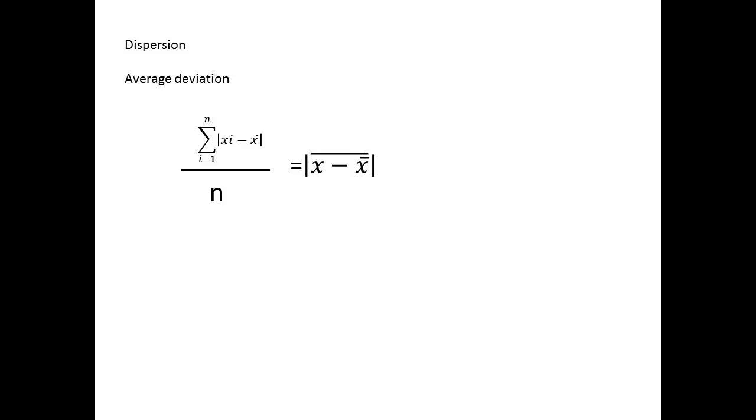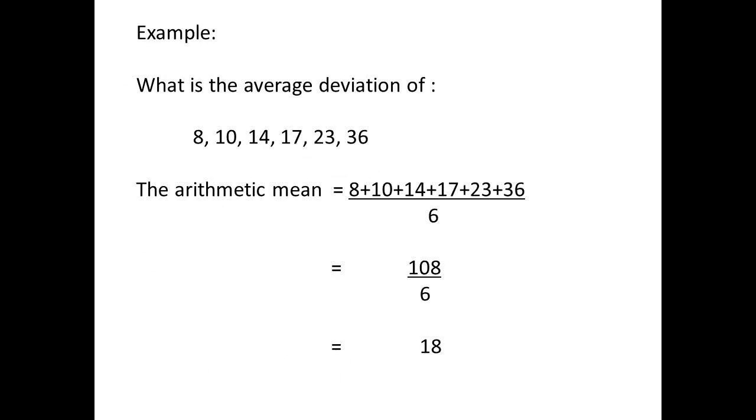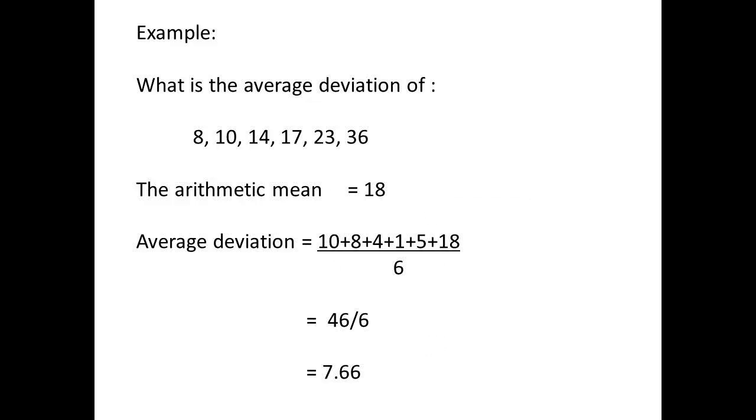The average deviation will be the sum of Σ|Xi - X̄| divided by n. Let us do a worked example. We will calculate the average deviation of 8, 10, 14, 17, 23, and 36. First of all, we need the arithmetic mean, which will be 8 plus 10 plus 14 plus 17 plus 23 plus 36, divided by 6, which is 108 divided by 6, giving an answer of 18.